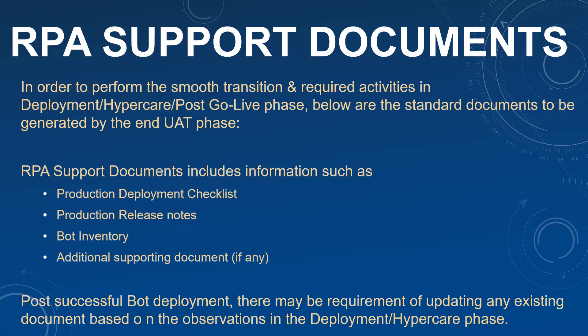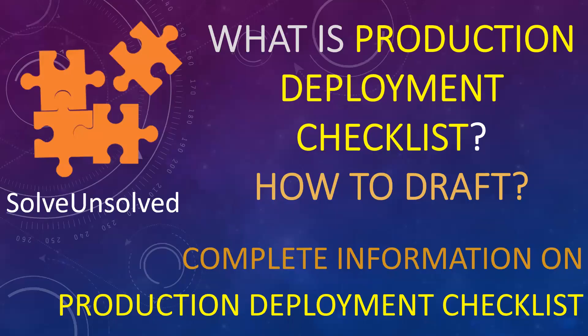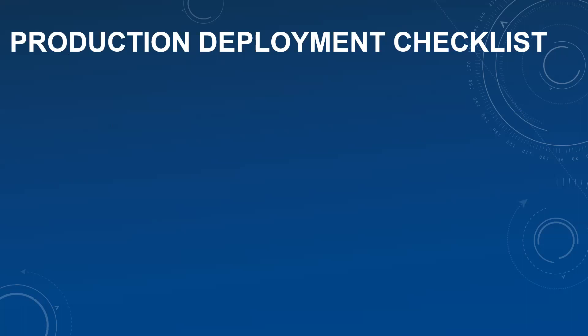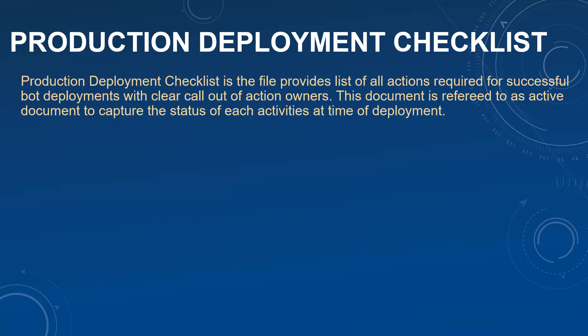Now let's look at each of these documents one by one. We will first discuss about the production deployment checklist — how to draft it and what this document looks like. A checklist is a set of steps which tells you what needs to be done and how, and it helps ensure that none of the steps are missed. The production deployment checklist is a document which provides a list of all actions required to ensure the successful bot deployment.